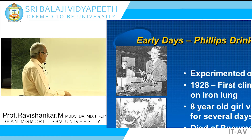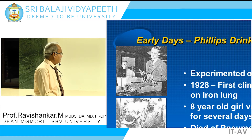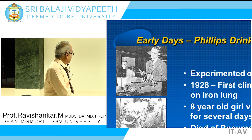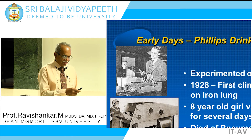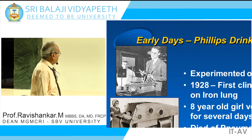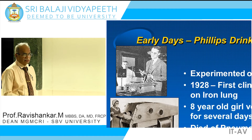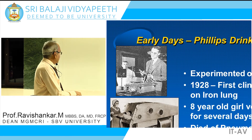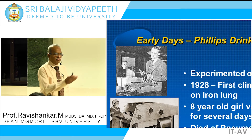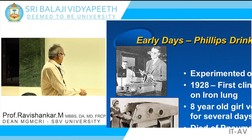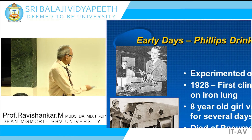Eight years later, this first iron lung in which a human being was kept inside was used — an eight-year-old girl, ventilated for seven days using this same technology, only using a motor to produce movement of air. But later she died of pneumonia. This is Drinker's iron lung — he designed it so the head is outside and the rest of the body is inside, with two holes for nurses to provide nursing care. The motor is at the bottom. This is how the first negative pressure ventilator was designed, way back in 1937.